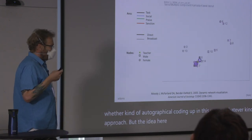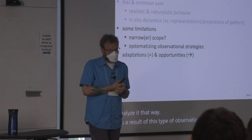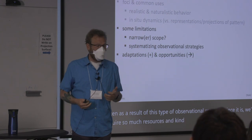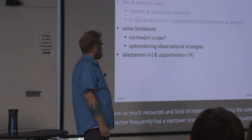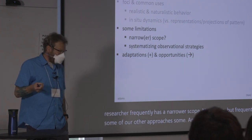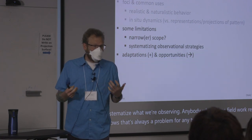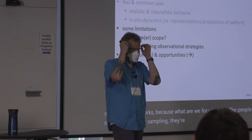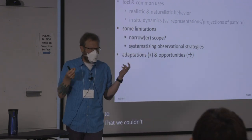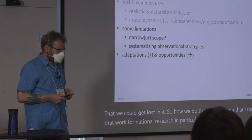The idea is to observe behavior as it takes place, code it up, and analyze it that way. Often this type of observational research, because it requires so much resources and intensive effort on the researcher's side, has a narrower scope. Another challenge is how we systematize what we're observing. I think it's even more so for networks — because what are we focusing on? The people, the relationships, time sampling? There are so many things we can attend to that we can get lost in it.